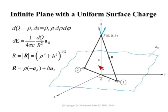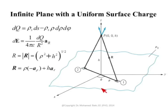We'll assume the observation point has a height h from that plane, so h does not change — h is a constant. Because this problem seems to have a cylindrical symmetry, you can look at this plane like a circle of infinite radius.